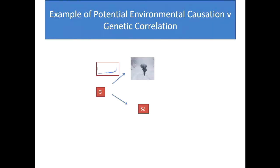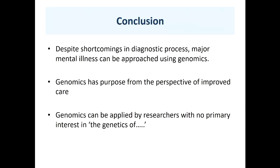Coming to the conclusion: I hope I haven't been too aggressive or too defensive, but over the years I've had to face a lot of skepticism about there being any purpose to doing psychiatric genetics. I hope at least two of you have been persuaded that despite the shortcomings in our ways of classifying psychiatric disorders, mental illness can be approached by genetics and that there's a purpose to it. We haven't got all the answers - nowhere near - but we're beginning to find things that look like they'll become useful from biology, from stratification, and even things that are interesting but not useful, like evolution.